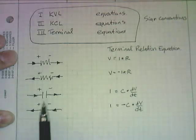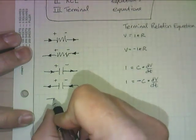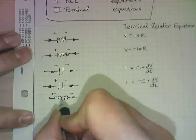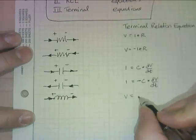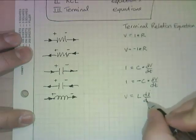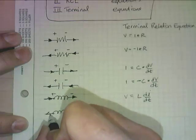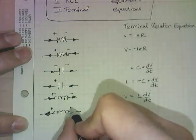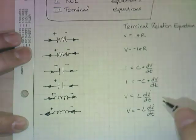Inductor's basically the same thing. If we have a plus and a minus and the current going left to right, then we have a positive situation and our voltage is going to equal our inductance times the derivative of the current. The opposite is true, so this pattern holds for any passive device, and the voltage is going to be the negative of the inductance times dI/dt.